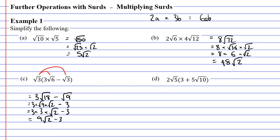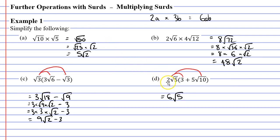We'll now move on to question d. Again, we take the term to the left of the brackets and multiply it by each term inside. First, 2 root 5 times 3: multiply the whole numbers — 2 times 3 is 6 — and there's only one surd, the square root of 5, so we write 6 root 5. Then we multiply 2 root 5 by 5 root 10: 2 times 5 is 10, plus 10, and the square root of 5 times the square root of 10 gives us the square root of 50.